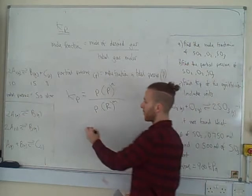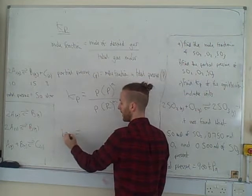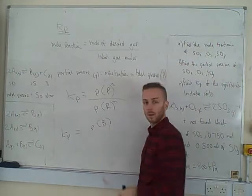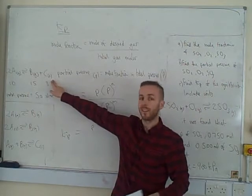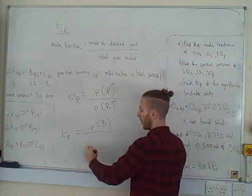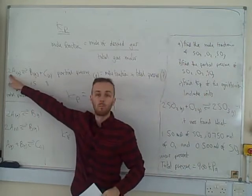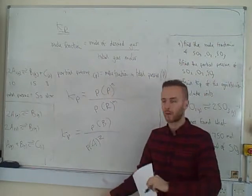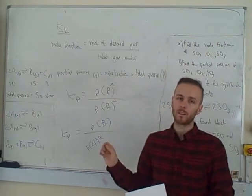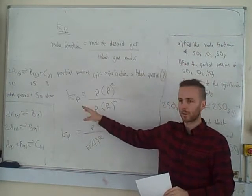For our example, KP equals the partial pressure of B — we don't include C because it's a solid — divided by the partial pressure of A raised to the power 2, because of the stoichiometric ratio. That's the KP expression. When writing these, make sure you use the actual chemicals from the question, not just generic 'products over reactants'.